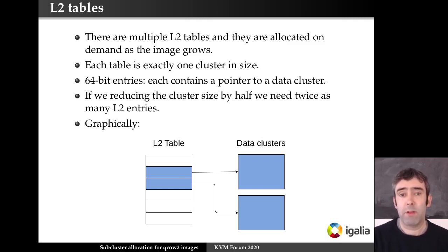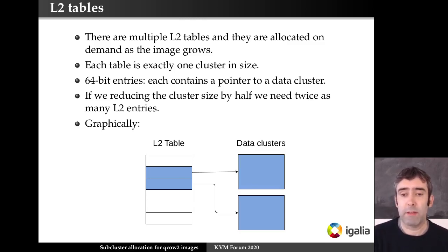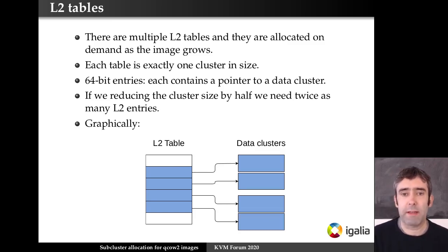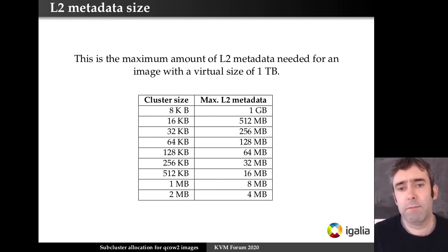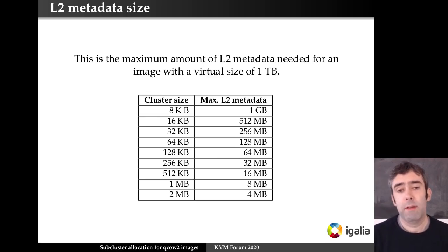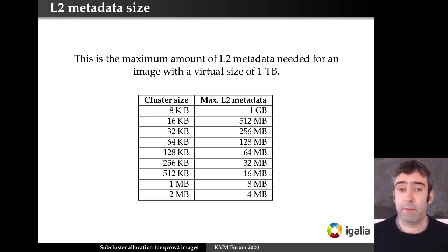If we reduce the cluster size, we need more entries. Graphically, if we have two clusters and make the clusters twice as small, we're going to have four clusters and need four entries. So half the cluster size means twice the metadata. Here we see in the table what the maximum metadata is for a 1TB image — if you reduce the cluster by half, you increase metadata by two, which is a very big difference. So choosing the right cluster size has a very big impact on the amount of metadata in the image.